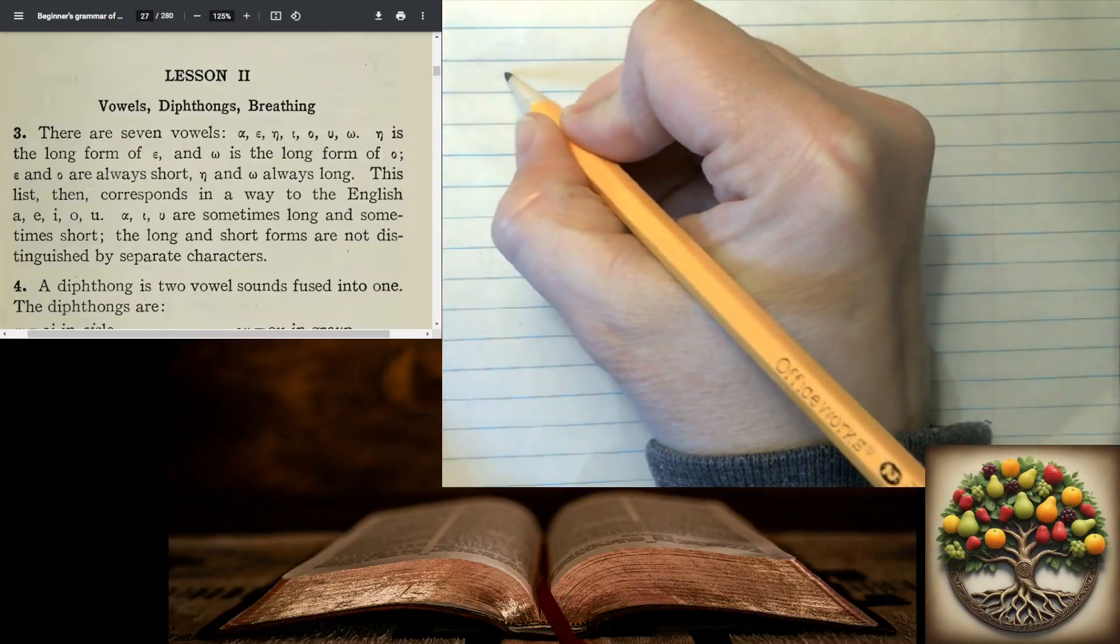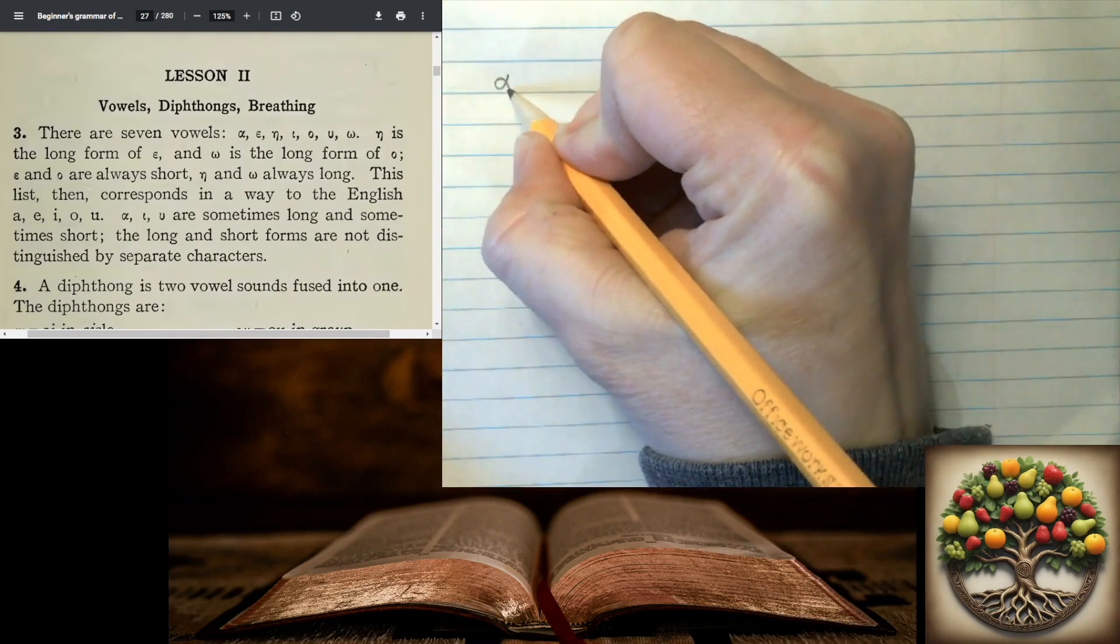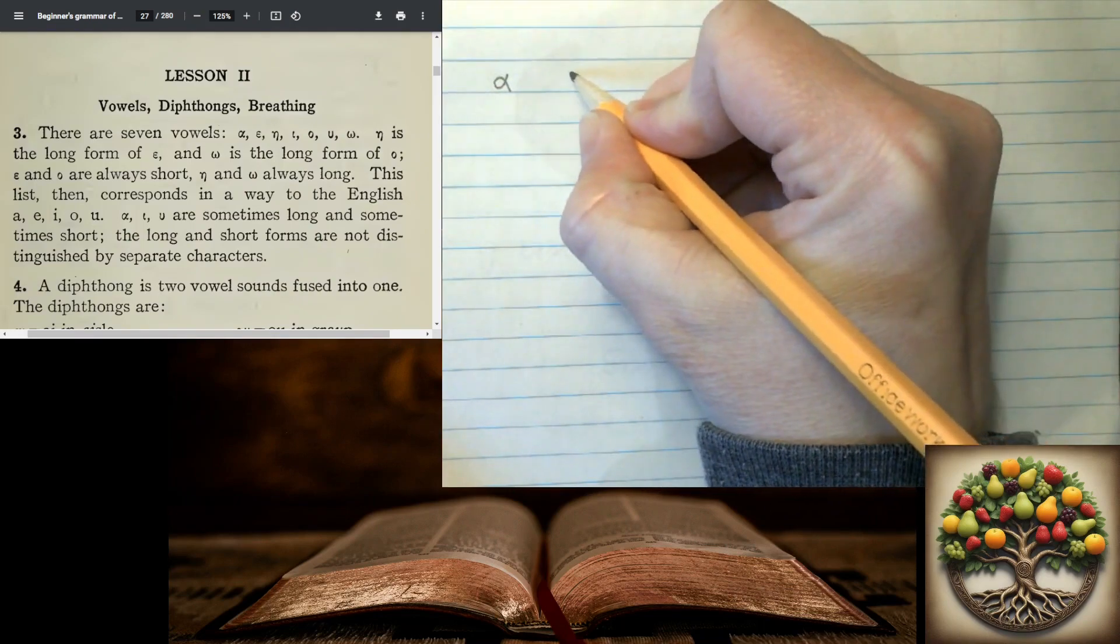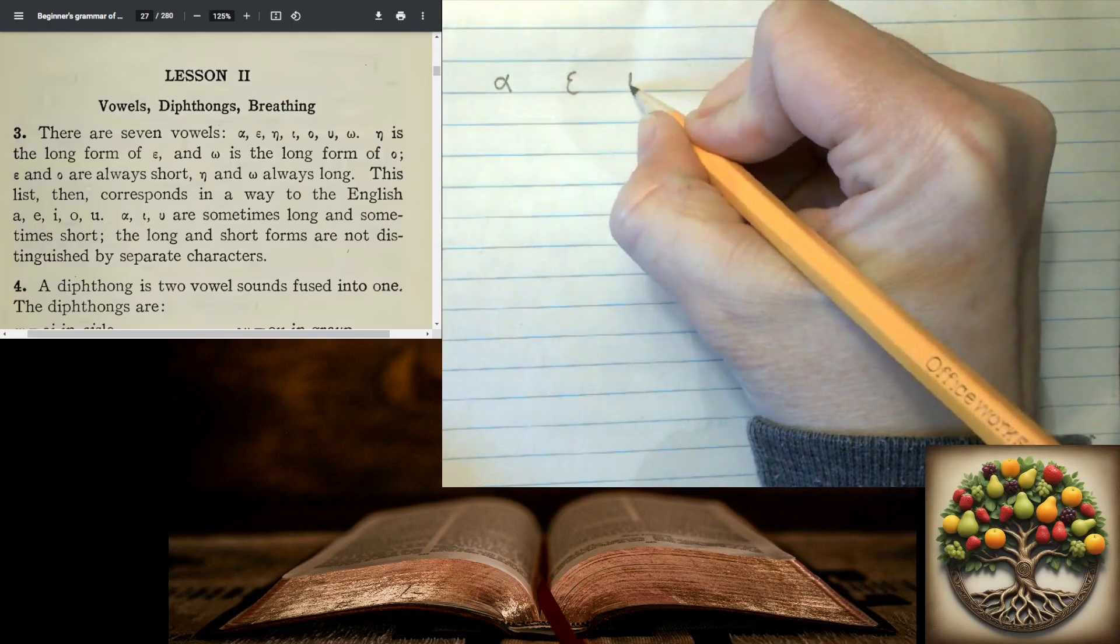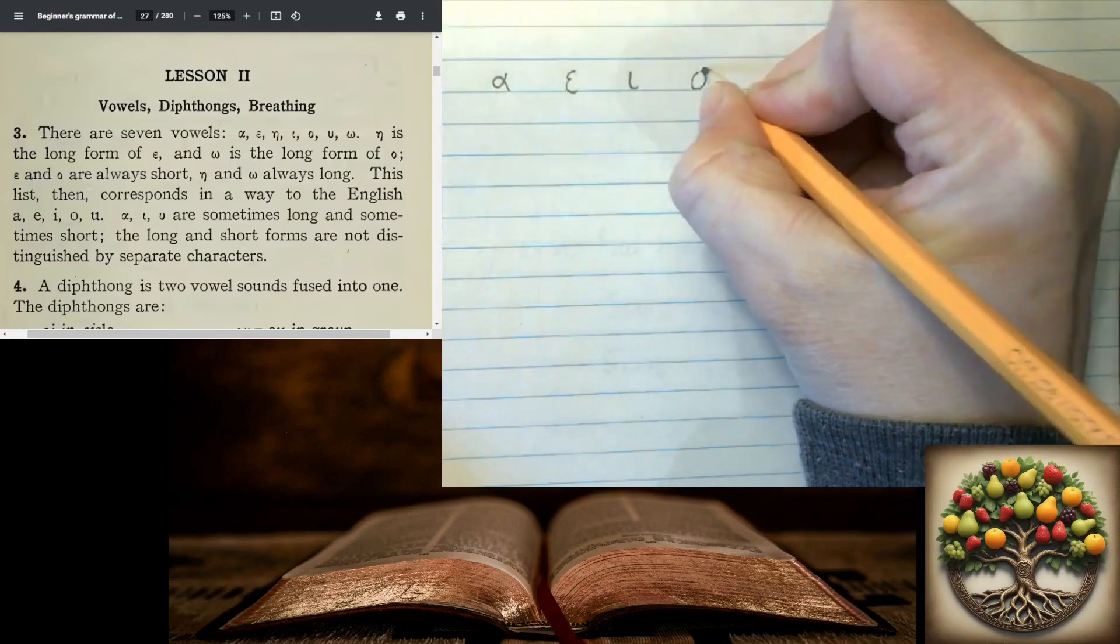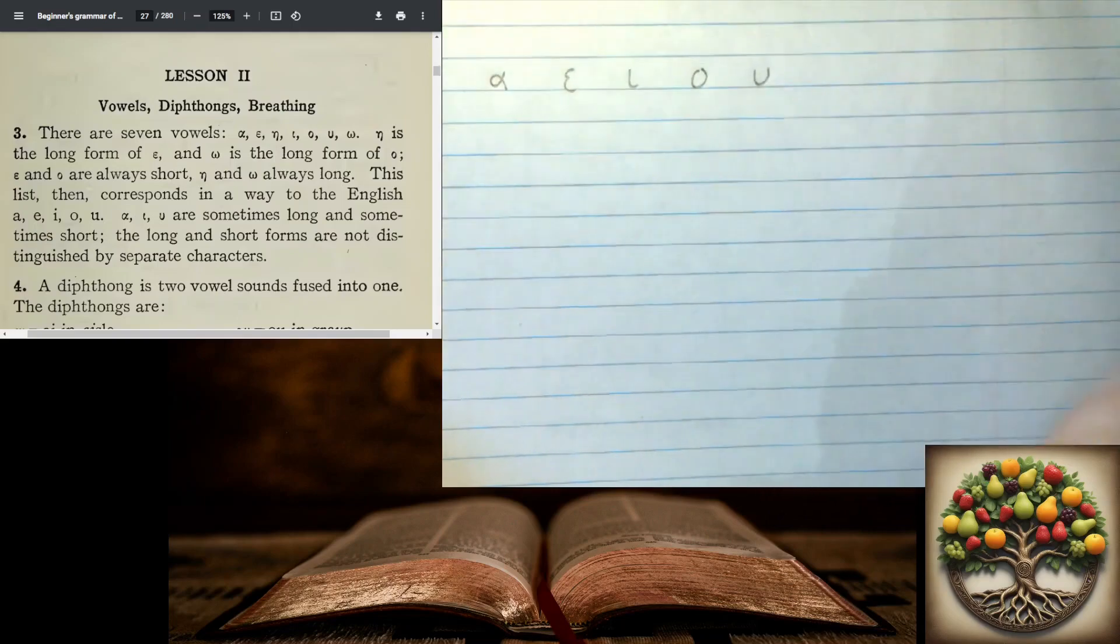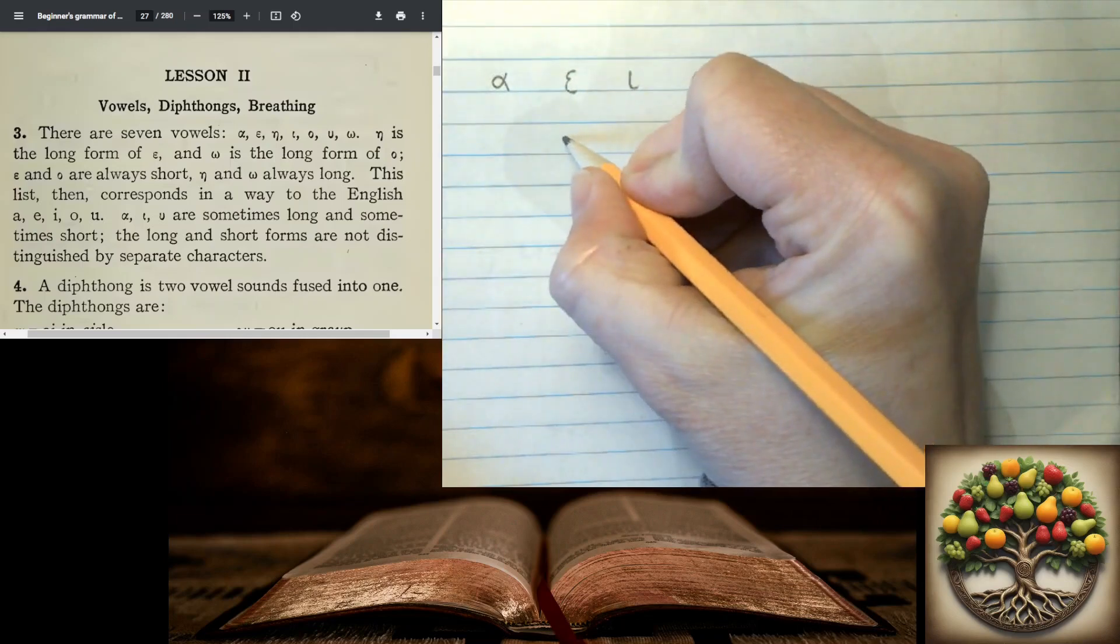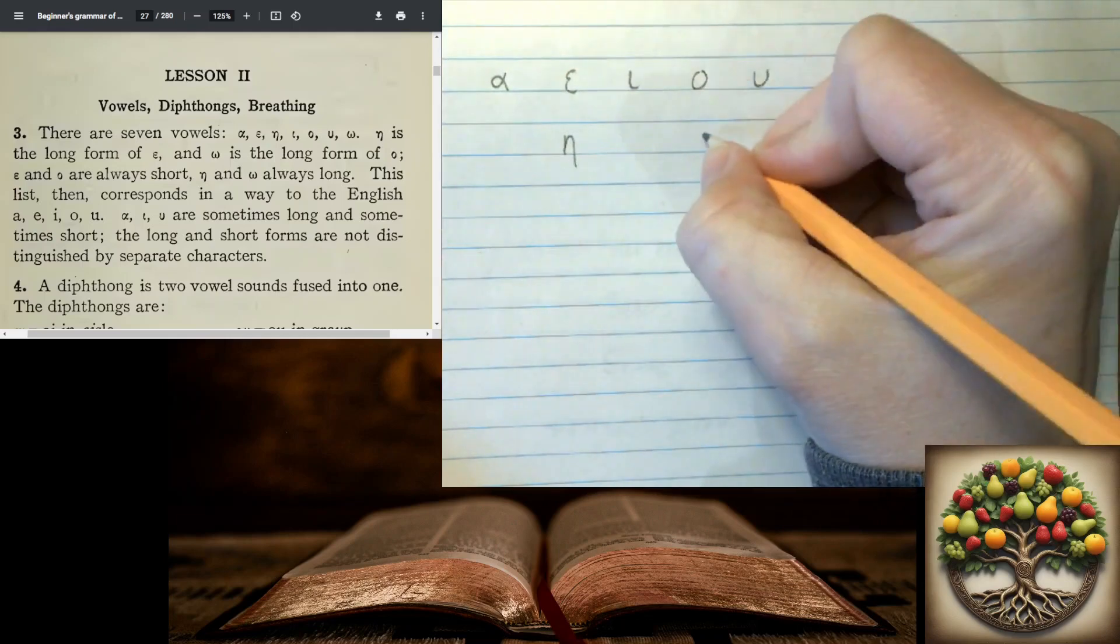We're going to go with our alpha, epsilon, iota, omicron, upsilon. And we also have eta and omega.